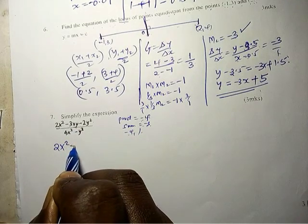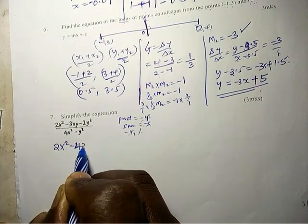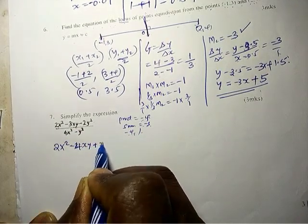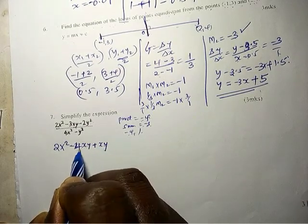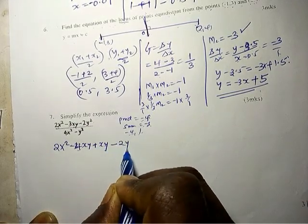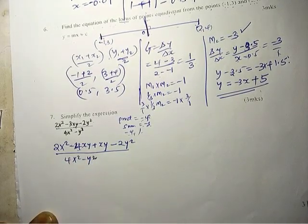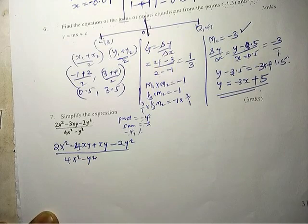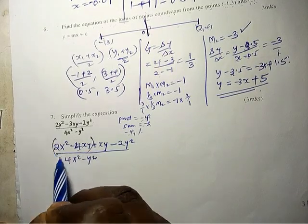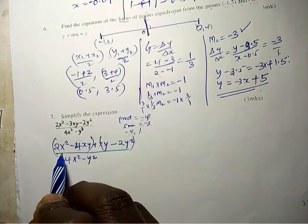...negative 4xy plus xy. This one is going to give us negative 3 minus 2y² divided by 4x² minus y². But now we can simplify this one, so we are going to have the...